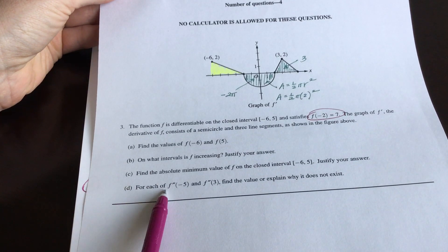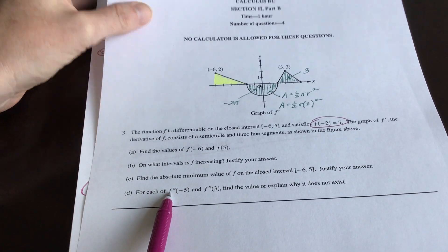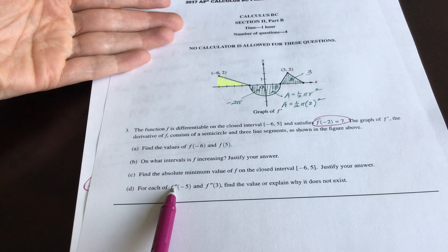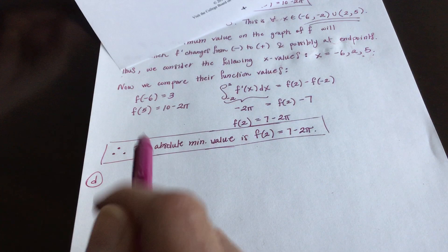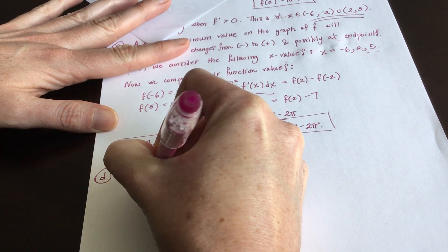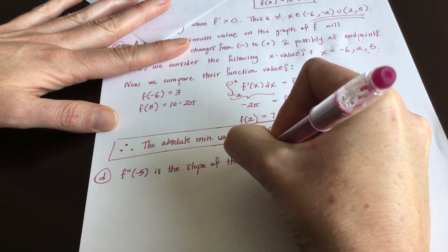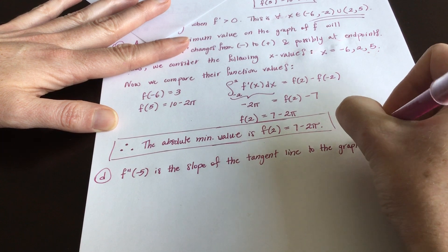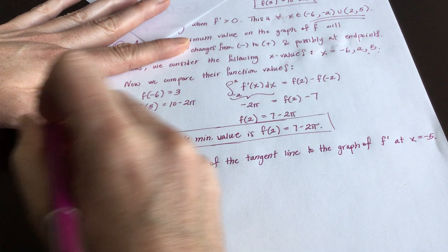Part D asks: for each of f double prime of negative five and f double prime of three, find the value or explain why it does not exist. Since this is the graph of f prime, f double prime represents the slope of the tangent line to f prime. So f double prime of negative five is the slope of the tangent line to the graph of f prime at x equals negative five.